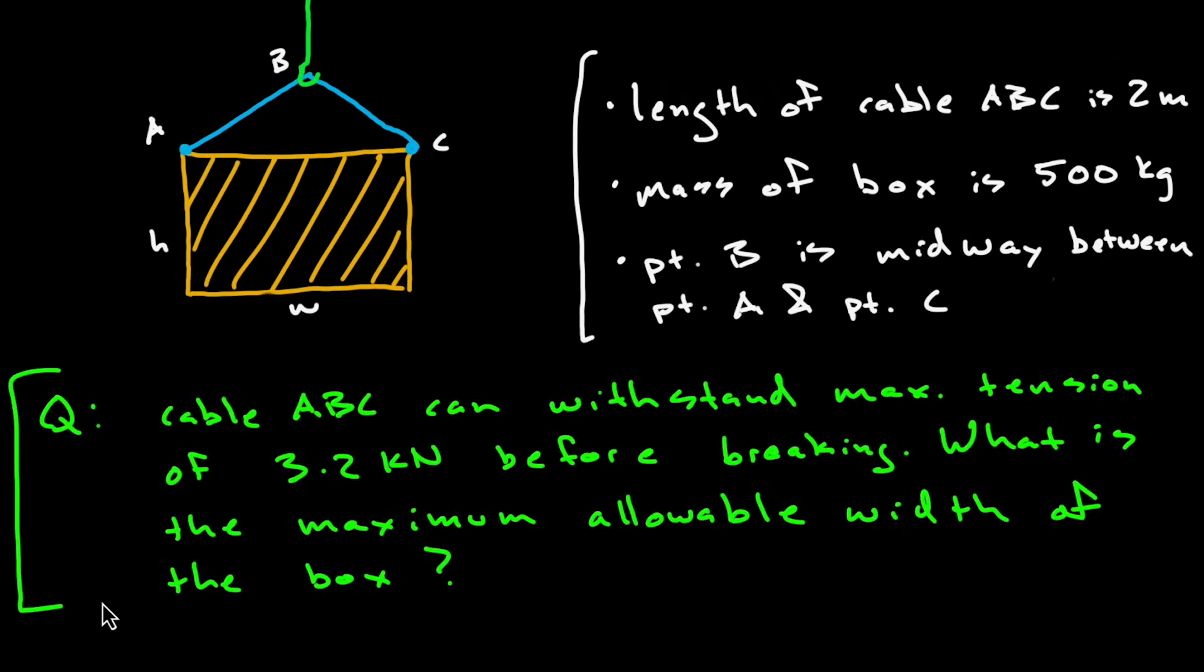And then the actual problem statement states that cable ABC, again this blue cable, can only withstand a maximum tension of up to 3.2 kilonewtons, after which it'll break. And then the question asks what is the maximum allowable width of the crate? Which kind of implies that there's some relationship between the width of the box and the amount of tension in the cable.